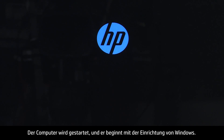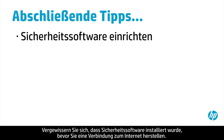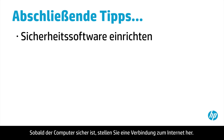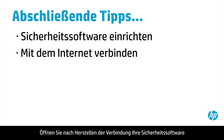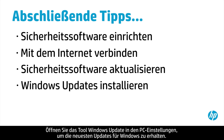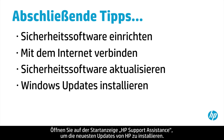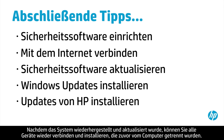Now your computer will restart and begin the Windows setup process. After recovery, your computer is more vulnerable to security threats. Make sure you have security software installed before connecting to the Internet. Once your computer is secure, connect to the Internet — do this before installing other software in order to get the latest updates to your system. After connecting, open your security software and get the latest updates, especially updates to virus definitions. Open the Windows Update tool in PC settings to get the latest updates for Windows. Open HP Support Assistant on the Start screen to install the latest important updates from HP. Now that your system has been recovered and updated, you can reconnect and install devices that were unplugged previously.